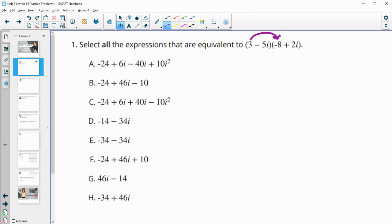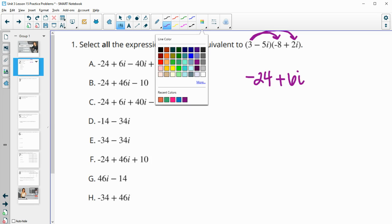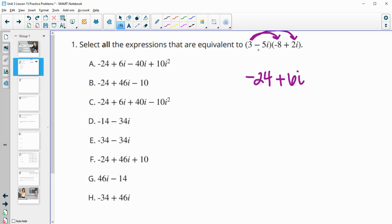So I'm going to distribute 3 times negative 8, so that's negative 24. And then 3 times 2i, which is a positive 6i. Then distribute the negative 5i to each. So negative 5i times negative 8 is positive 40i. And then negative 5i times 2i is negative 10i squared.